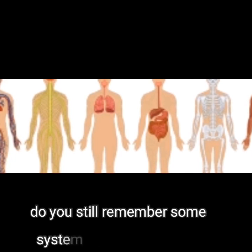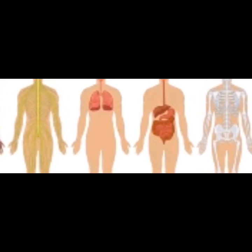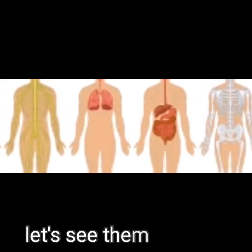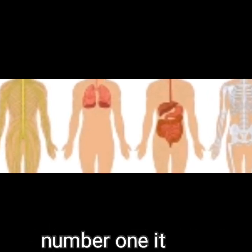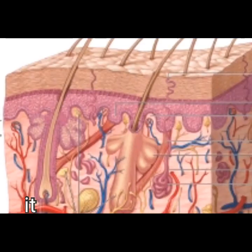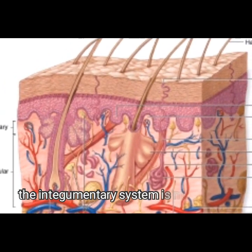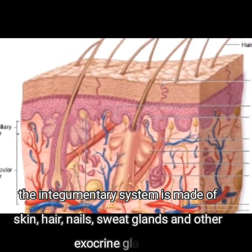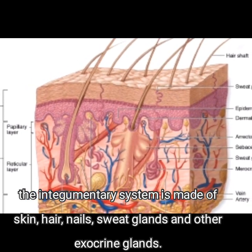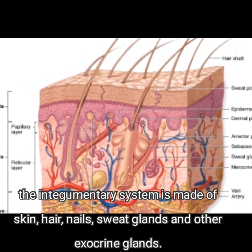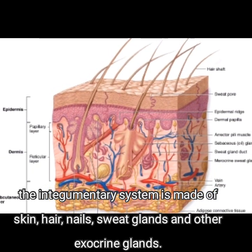Do you still remember some systems of the human body? Let's see them together. Number one is the integumentary system. The integumentary system is made of skin, hair, nails, sweat glands, and other exocrine glands.